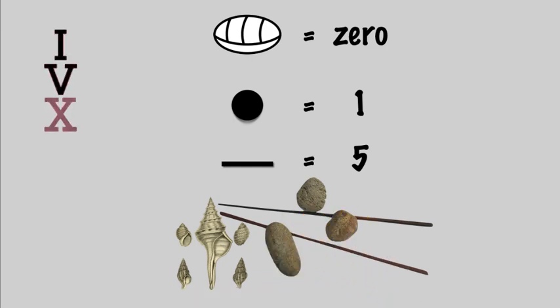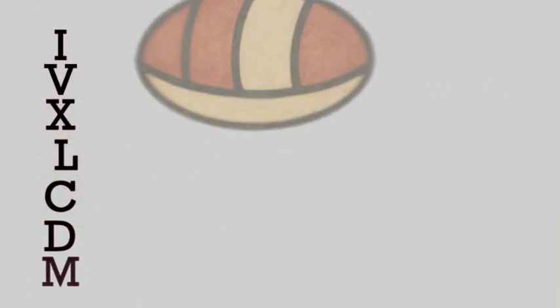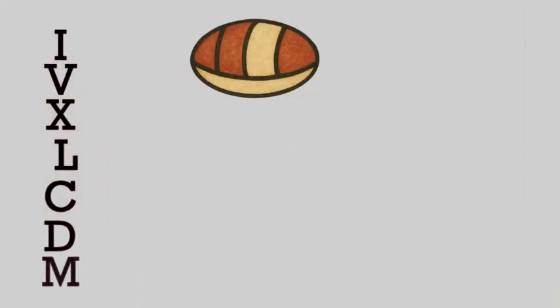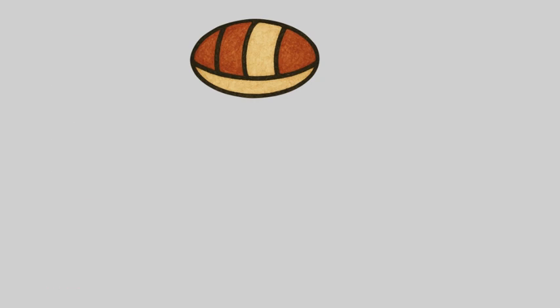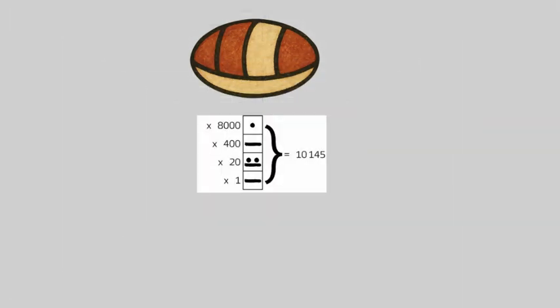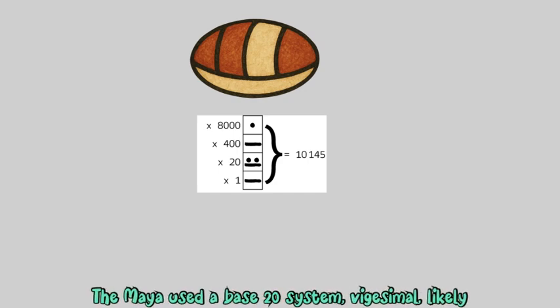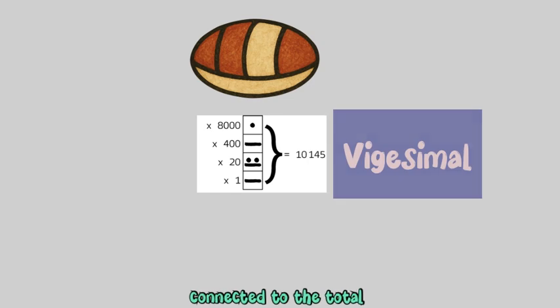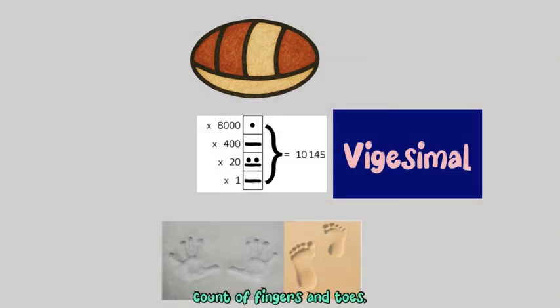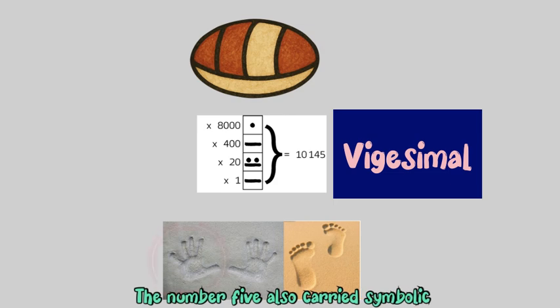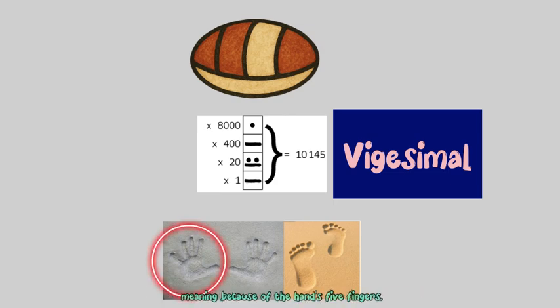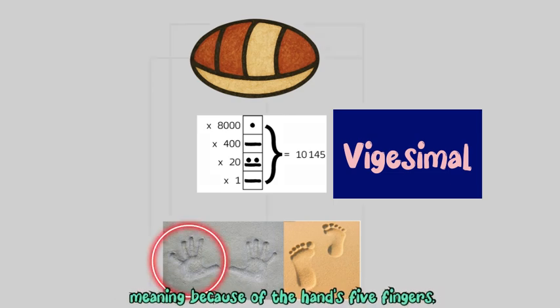Unlike Roman numerals, the Maya system had two groundbreaking features: a symbol for zero, one of the earliest in human history, and a place value system similar in concept to our modern decimal system. The Maya used a base-20 system, called vigesimal, likely connected to the total count of fingers and toes. The number five also carried symbolic meaning because of the hand's five fingers.